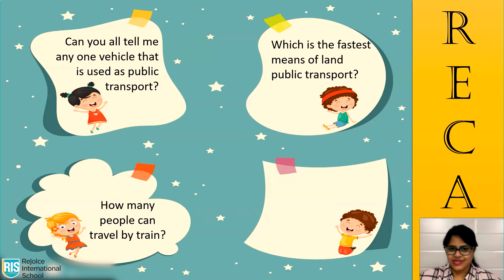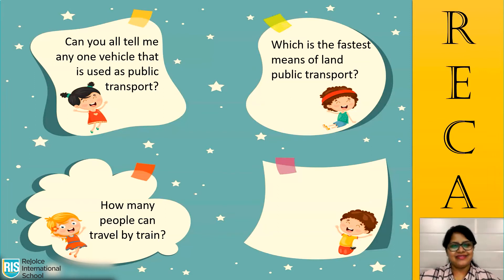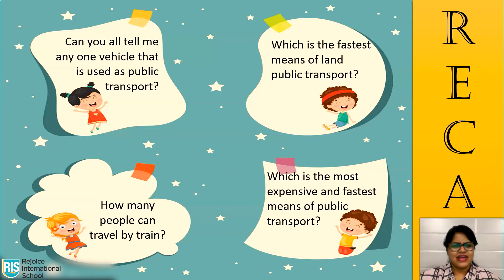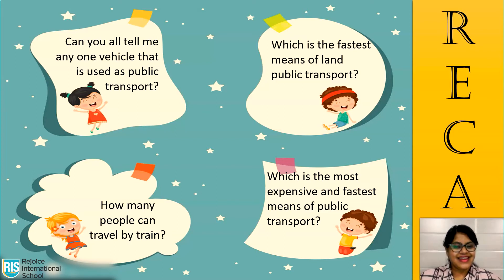How many people can travel by train? Excellent — 300 to 500 people. Which is the most expensive and fastest means of public transport? Correct, air transport.